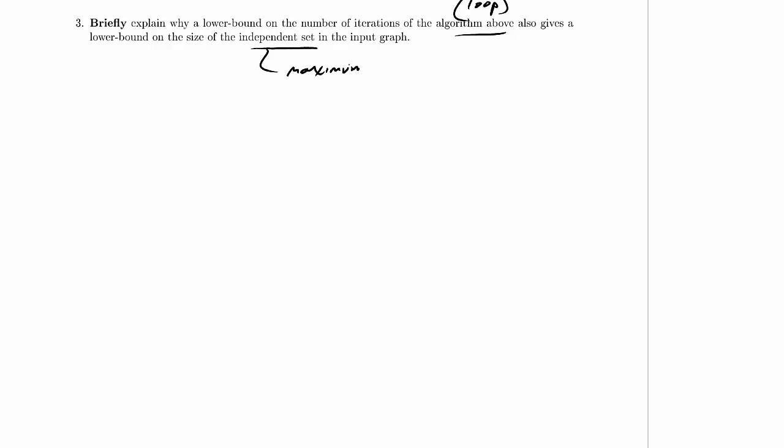So let's go back to this problem again. It says, Explain why a lower bound on the number of iterations of the algorithm, the loop above, also gives a lower bound on the size of the independent set in the input graph. This has got to be asking really about the size of the maximum independent set.